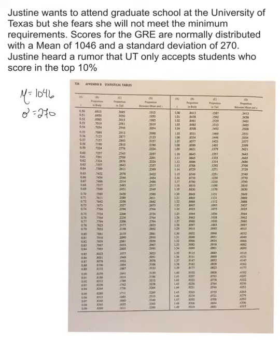Justine wants to attend graduate school at the University of Texas, but fears she will not meet the minimum requirements. Scores for the GRE are normally distributed with a mean of 1,046 and a standard deviation of 270.